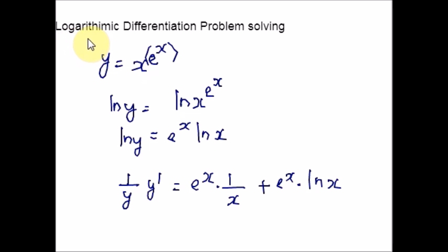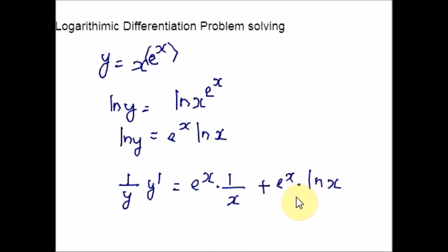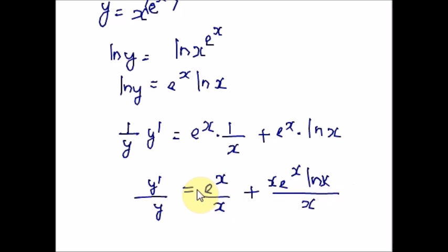Under logarithmic differentiation we are not only applying logarithmic rules alone — we are doing a combination of rules, using whatever rule is applicable at each step. Now get a common denominator and combine the fractions on the right-hand side. If I multiply both numerator and denominator by x, both fractions will have the same denominator. I have just multiplied the fraction: 1 over y times y dash equals y dash over y.